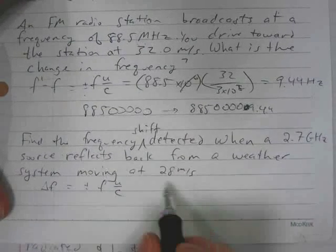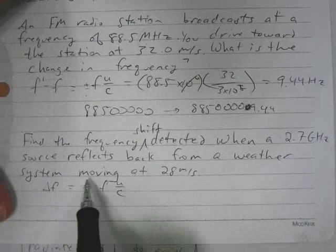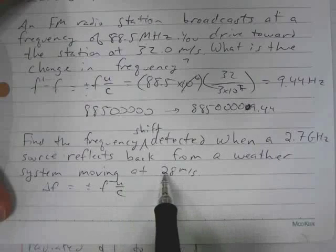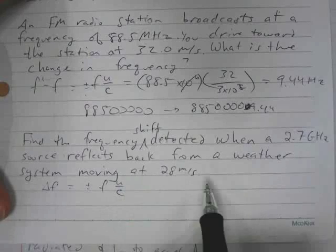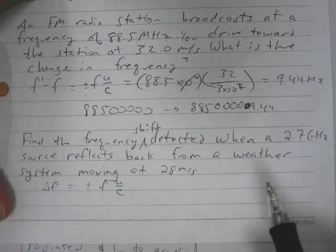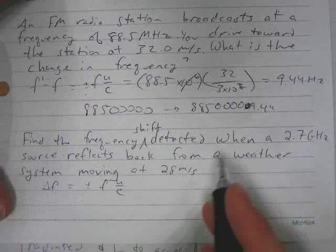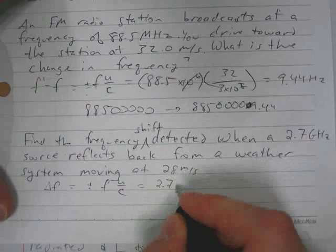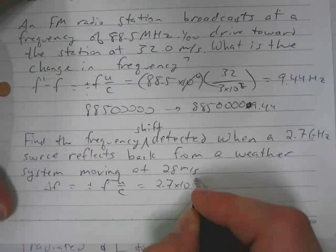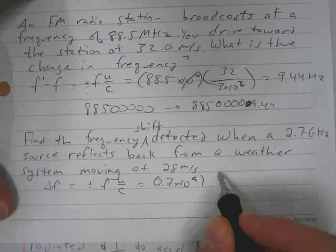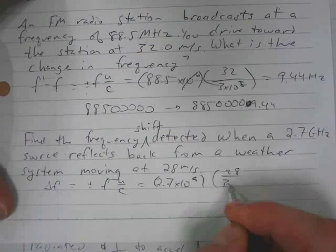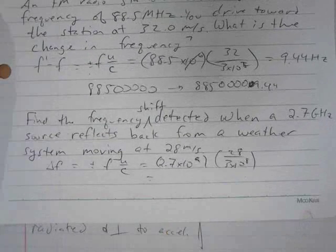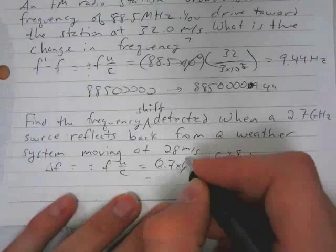We can just plug stuff in. It's reflecting back from a weather system moving at 28 meters per second. We don't know what direction this 28 is, whether it's moving toward the source or away. So we're just finding the magnitude of the change in frequency. The frequency is 2.7 gigahertz. Giga is 10 to the ninth. Our speed is 28, speed of light is three times 10 to the eighth.